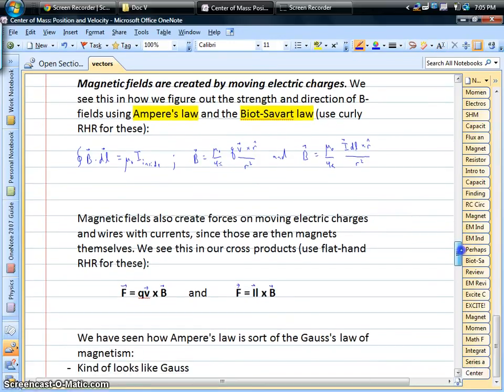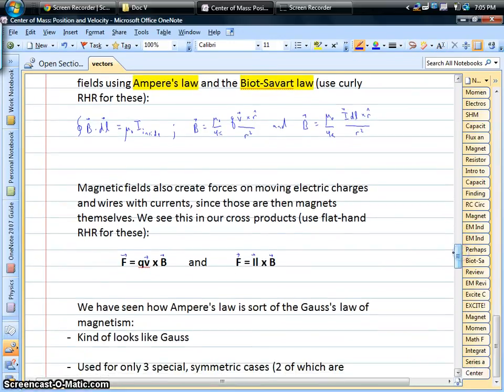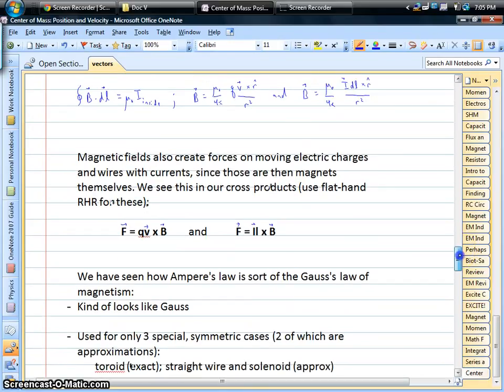We've also hit things like, once you have these magnetic fields and they produce forces on moving charges, we have these cross products. We've got on a single charge QB cross B. We've got it on wire with current IL cross B. And we've been using our right-hand rules for positive charges, we've been using left-hand rules for negative charges, and so on.